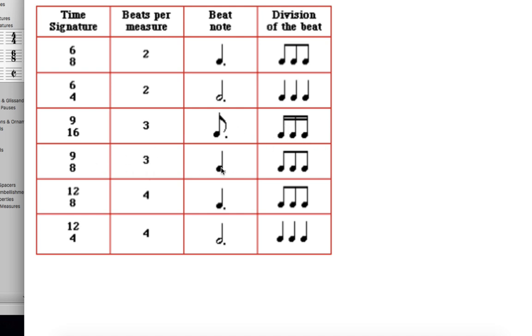9/8, three dotted quarter notes. And an eighth note, three eighth notes is the division of the beat. 12/8, there's going to be four dotted quarter notes because there will be 12 of these.